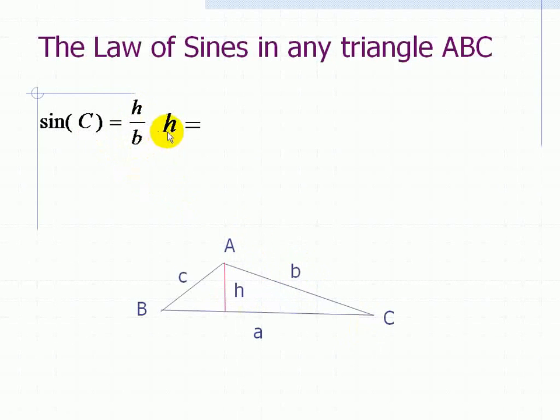Based on this, h must equal, by multiplying b on both sides of this equation, the b cancels out on the right side of this expression, and therefore we have what's left as b times the sine of C.